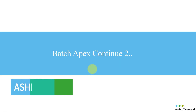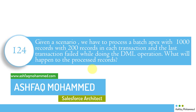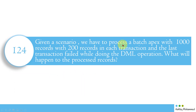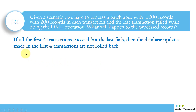The very first question for today is a scenario-based question: we have to process a batch Apex job with 1000 records, with 200 records in each transaction, and the last transaction failed while doing DML operations. What will happen to the already-processed records?